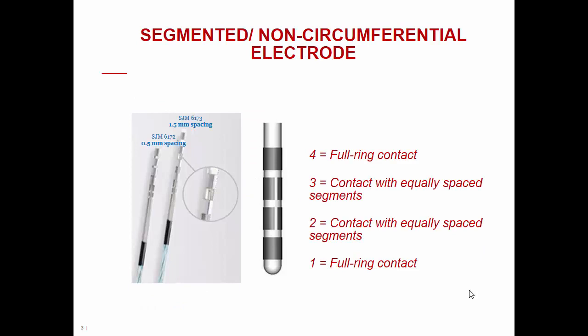In order to understand the functionality of Informity, we need to introduce a couple of key critical concepts. The first one is the anatomy of the DBS directional lead. The DBS directional lead consists of four different levels of stimulation, of which level 1 and level 4 — the most ventral and the most dorsal — are full ring contacts, while the two intermediate levels, level 2 and level 3, are further divided into three equally spaced segments or electrodes that allow directional stimulation.